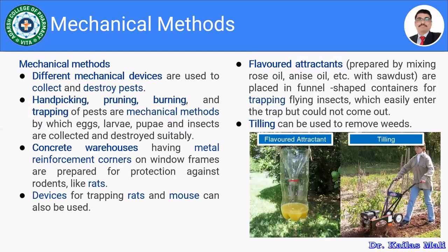The very first one is the mechanical method. The name itself indicates that we are using certain mechanical ways to manage the pest in the farm. Those mechanical ways include hand picking, pruning, burning, and trapping. Hand picking means we are picking the pest with the help of hand. There are certain mechanical devices with which it is possible to trap the pest. In the case of burning, a particular area of the farm is burned, so automatically the pests are managed. Similarly with trapping — we can use certain traps for rodents like mice.